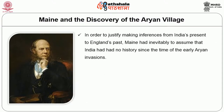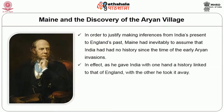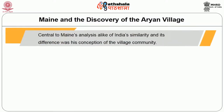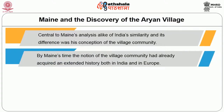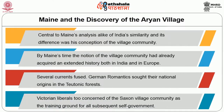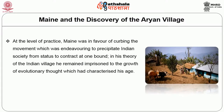Maine reasoned that India's ancient institutions, linked to those of Europe by common Aryan origin, became the germs out of which the social and political system of modern Europe had emerged. Indian institutions were not merely curious anachronisms but contained in themselves the making of successive phases of one ongoing process of development. However, in order to justify making inferences from India's present to India's past, Maine had inevitably to assume that India had had no history since the time of the early Aryan invasion. In effect, he gave India with one hand a history linked to that of England, and with the other took it away.